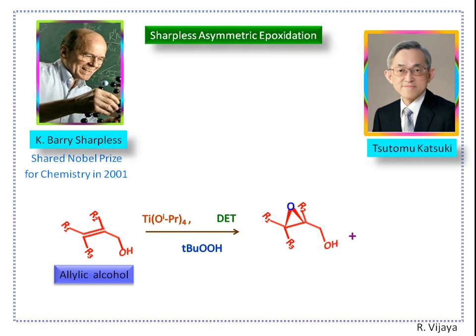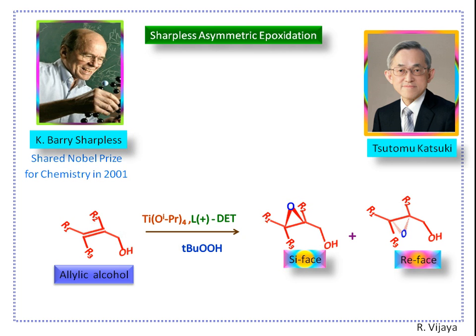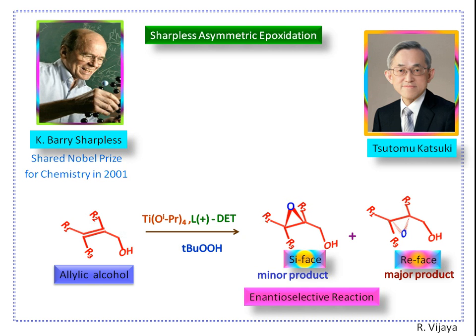We may get two enantiomers, but these two enantiomers are not in equal proportions. When we use D-diethyl tartrate, we get si-face attack of the epoxide as the major product and re-face attack as the minor product. When we use L-(+)-diethyl tartrate, we get the major product as re-face attack and the minor product as si-face attack. These types of reactions are known as enantioselective reactions.